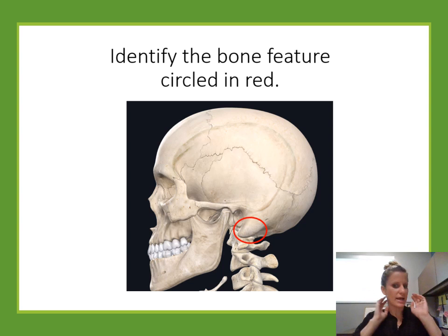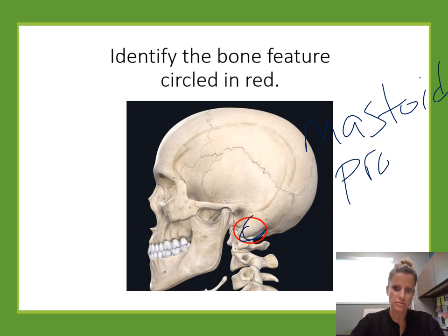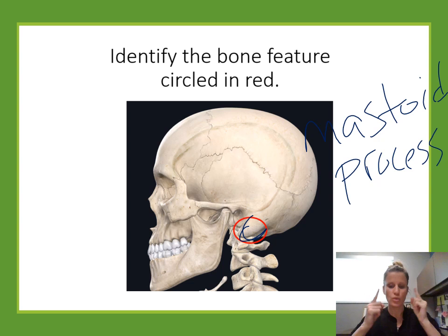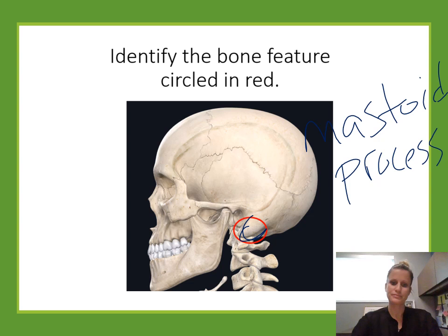Identify the bone feature. When we look at the side of the skull, the temporal bone has two obvious features. There's a really big rounded meaty process and a really pointy process next to it. This question asks about the rounded one — that's the mastoid process. The mastoid process is massive and round, where muscles attach. The really thin pointy one is the styloid process — like a stylus, really pointy.